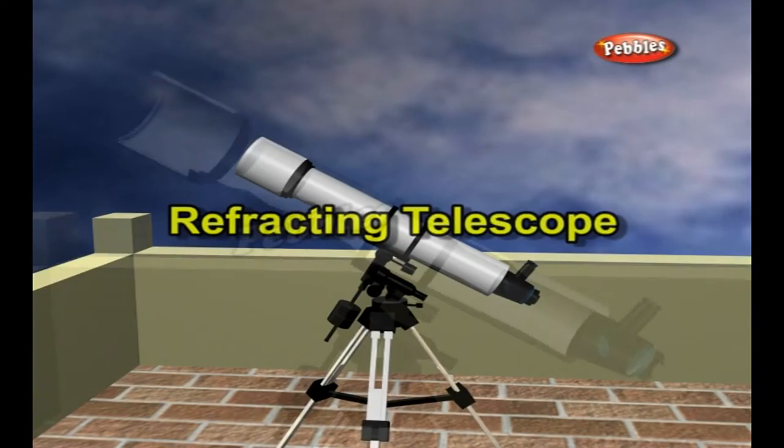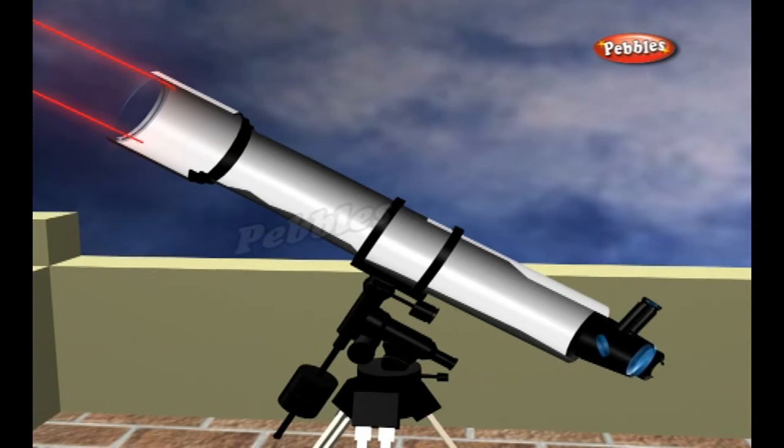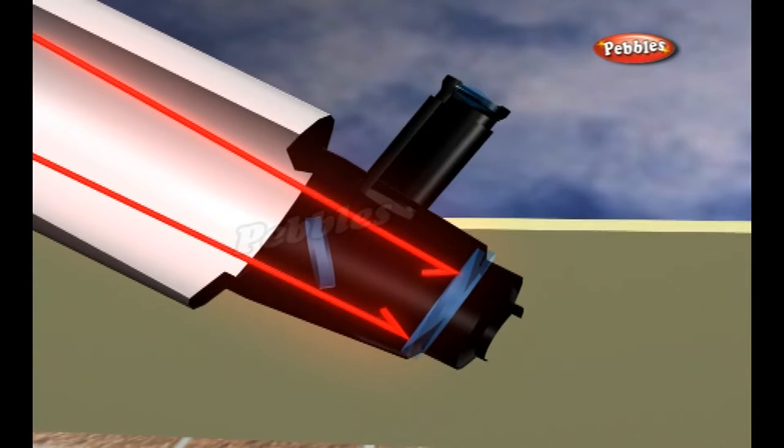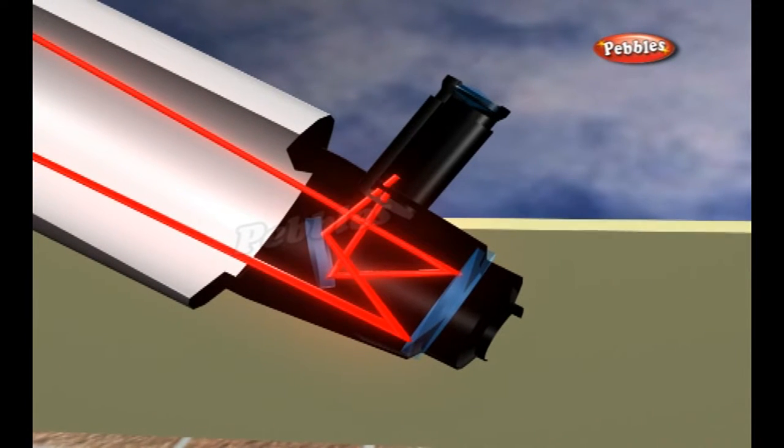As light passes through glass, it slows down. Slowing down a light beam makes it bend. The shape of the lens means light near the top of the lens is bent down and light near the bottom of the lens is bent up.